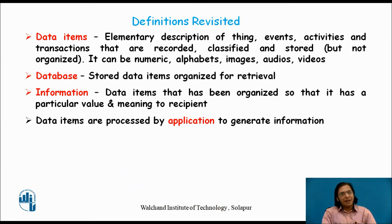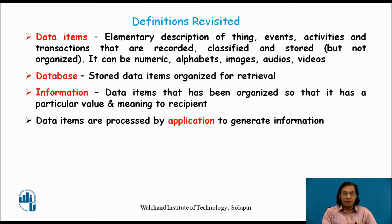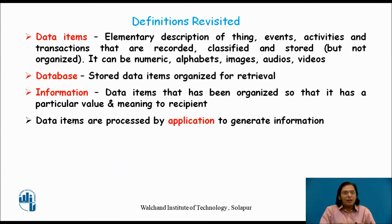Coming back to the example of your class database: your roll number is numerical data; your address consists of numbers as well as alphabets, so it is alphanumerical data; if I store your photographs, that is image data. Take the example of Facebook — you upload audios and videos also. So all of that is termed as data. When all this data is put together, it is called data items.